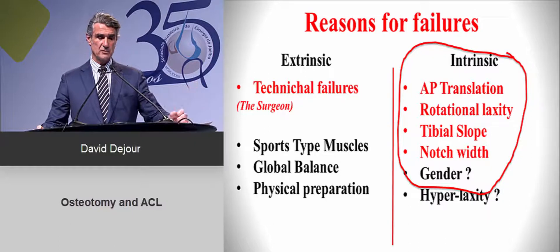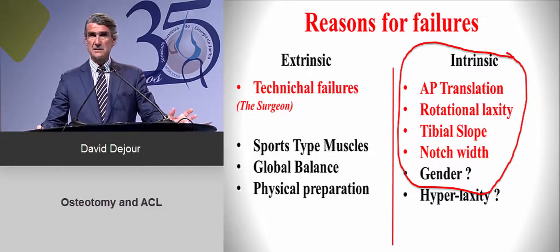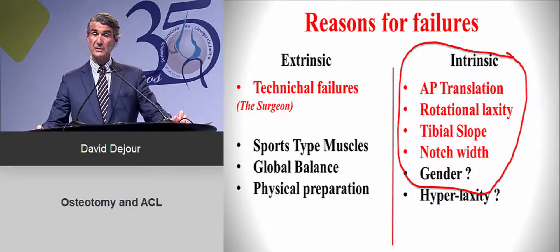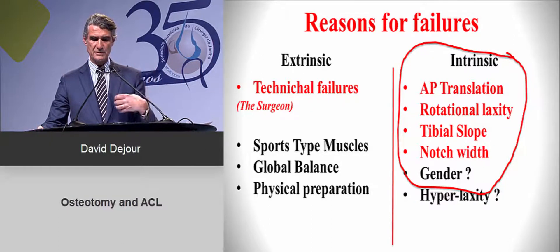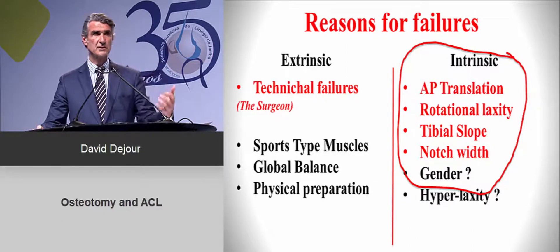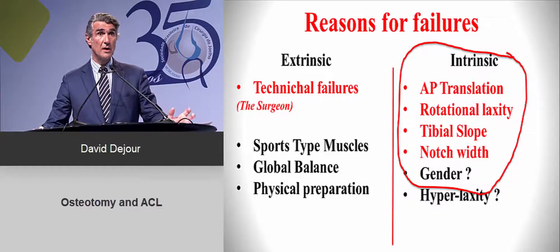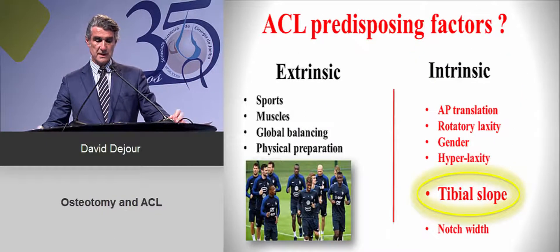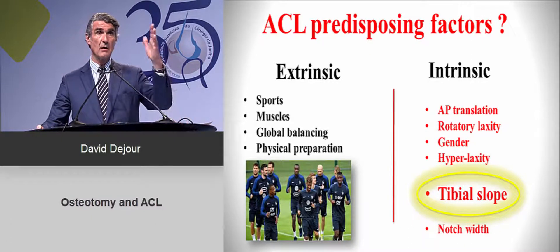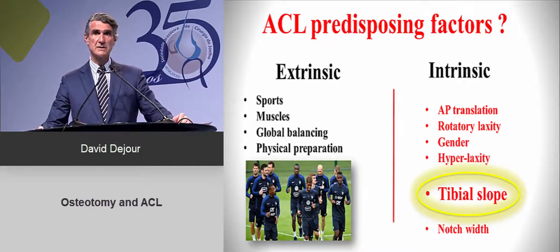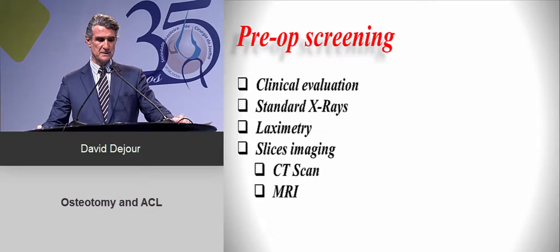The reasons for failure are of course extrinsic — technical failures, the surgeon, sports, muscles — but we will look at the intrinsic factors, which are so important: the AP translation, rotational laxity, tibial slope, the notch, gender, and hyperlaxity. I will focus this topic on tibial slope and alignment, because I will speak about osteotomies.